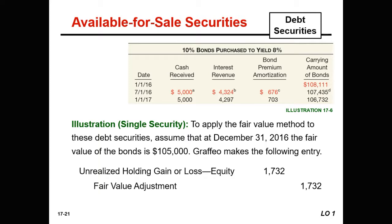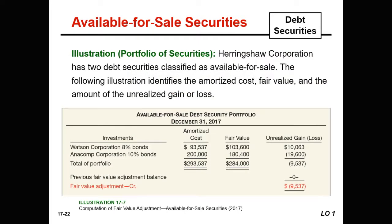Often the case is that we have multiple securities — a portfolio of more than one security. For example, Herring Shaw Corporation has two securities classified as available-for-sale. We would have a schedule illustrating the current amortized cost, fair value, and unrealized holding gain or loss for each. Then we would ascertain the fair value adjustment for the portfolio as a whole, making one entry rather than one for every individual security.